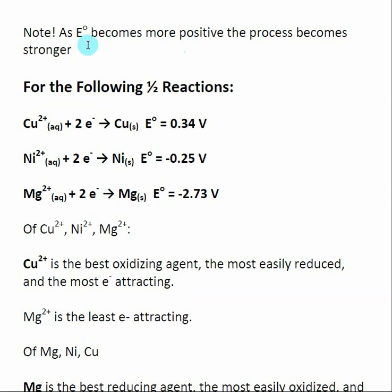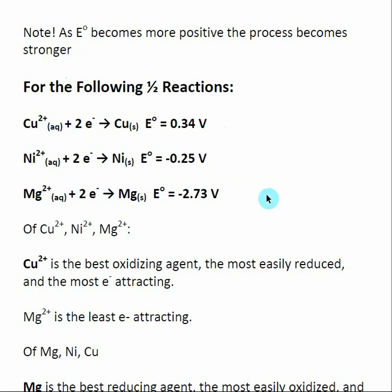One thing to remember is that a positive E naught means the reaction is favorable, and as that number becomes larger the reaction becomes more favorable. When we talk about half reactions in general form, they are always given as the reduction half reaction, and it's up to you to know when to flip it into an oxidation, as we did in the previous example.